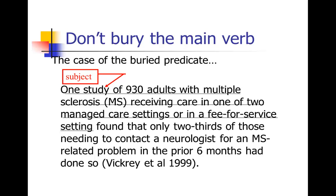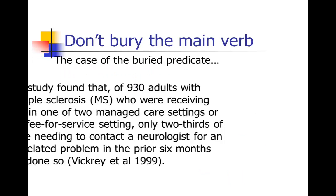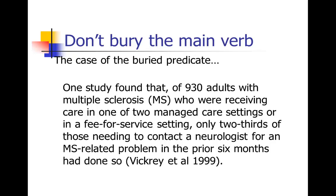This sentence has a really simple fix: just move the verb up. So: 'One study found that of 930 adults with MS who were receiving care in one of two managed care settings or in a fee-for-service setting, only two-thirds of those needing to contact a neurologist had done so.' The reader is not bothered by all of that descriptive stuff as long as they already have the verb. Your reader can follow 'one study found that' with all the other stuff set off in commas. You've got to keep that verb close to the subject near the start of the sentence. I'm going to show you more examples of authors putting a lot of distance between their subject and their main verb.